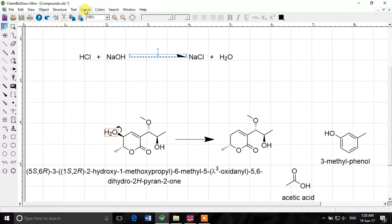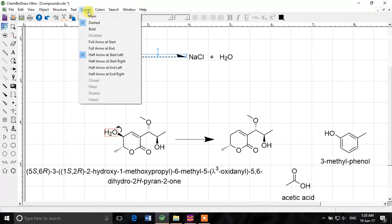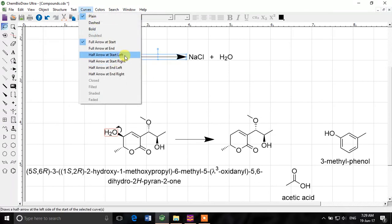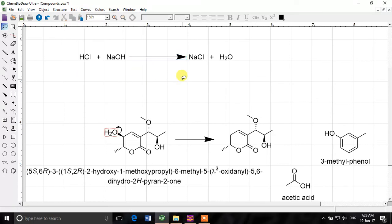You can make it dashed arrow, not plain arrow. You can make it bold arrow. We make it again plain and we make full arrow at start. And that's a normal arrow. So you select the arrow, you go to curves and you have different arrow options which you can apply to this arrow. So that was about modeling different reactions and converting structures to names, getting NMR of the compounds in ChemDraw.